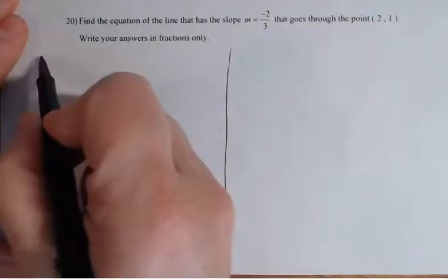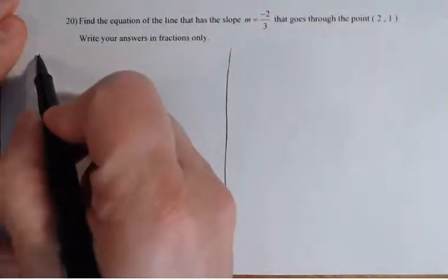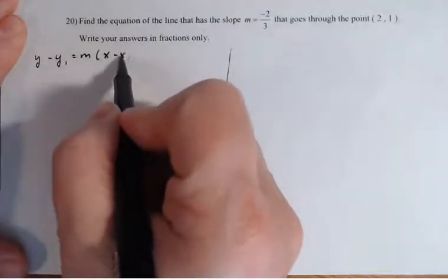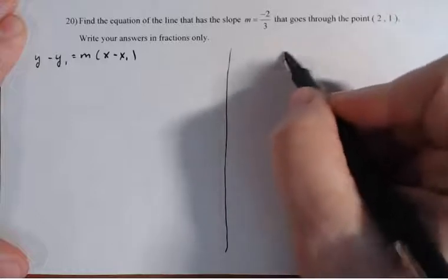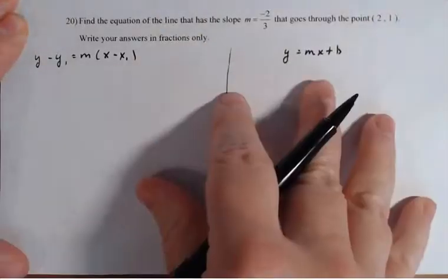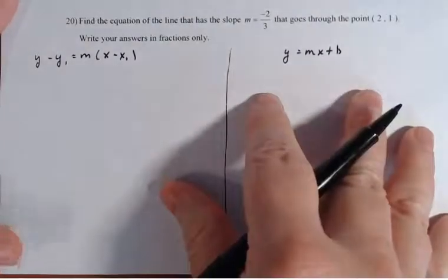So this method here, I'm going to use this formula: Y minus Y1 equals M times X minus X1. And over here, I'm going to use Y equals MX plus B. Some people are taught different ways and I don't care which method you use.